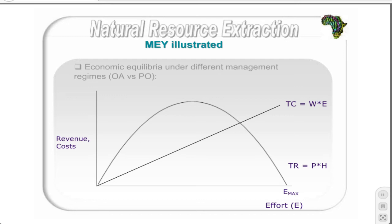The total revenue TR earned from harvesting equals the harvest rate H multiplied by the market price P per unit of fish caught. The TR curve has the same shape as the yield curve from the previous diagram. Since price P is assumed constant, TR follows the same pattern as the harvest rate — increasing at low levels of effort but at a decreasing rate, the upward-sloping portion, eventually reaching a point where each additional unit of effort results in less resource being harvested, adding less to total revenue — the downward-sloping portion.